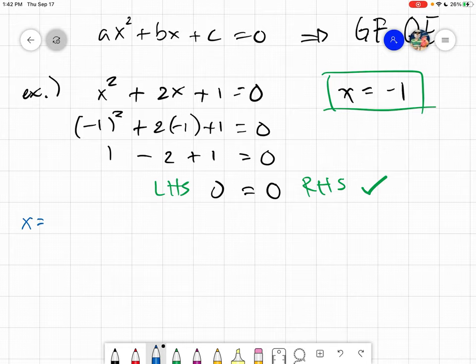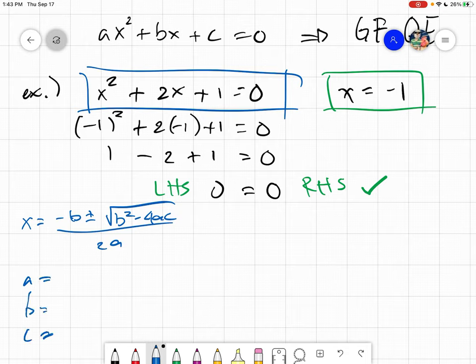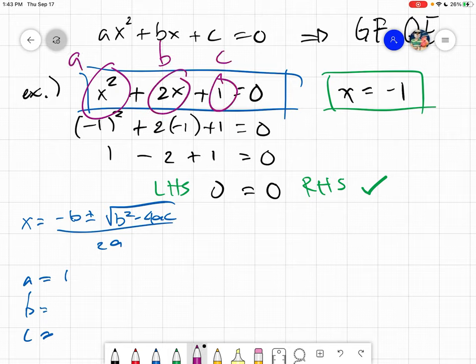Using the quadratic formula, negative b plus minus the square root of b squared minus 4ac divided by 2a. First, we identify what is our a, our b, and our c from the equation. Our a is 1, because any given variable having no visible numerical coefficient automatically has 1. Our b is 2 and our c is 1, taking also the sign before them.